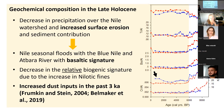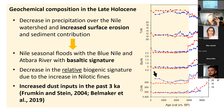In the late Holocene, we see a decrease in precipitation over the Nile and entry into the arid environment seen today in North Africa. There is less vegetation and increased surface erosion. The Nile seasonal floods transport the basaltic signature — elevated iron-to-silica ratios because the volcanic basalts are being eroded. We also see a decrease in relative organic signature and an increase in dust inputs in the past 3,000 years, reflecting increasing aridity also evidenced in Dead Sea records.